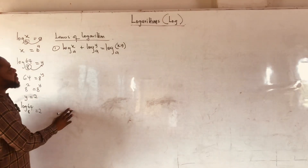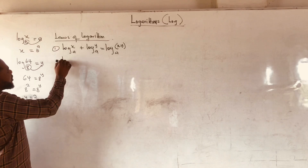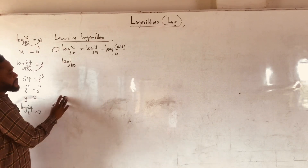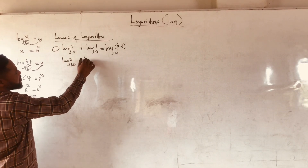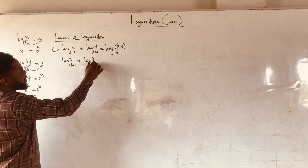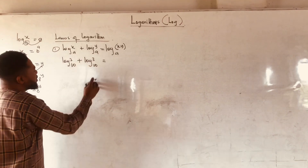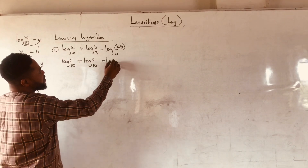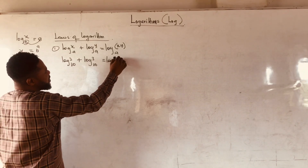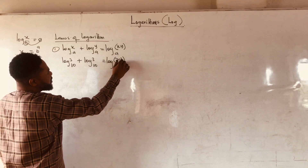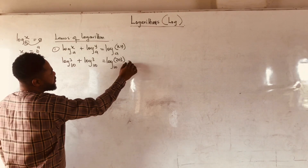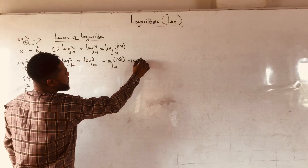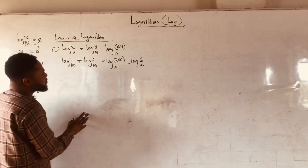Let us look at an example. Let's say I have log 2 base 10 plus log 3 base 10. I am going to produce log 2 times 3 base 10, and we can simplify this as log 6 base 10.